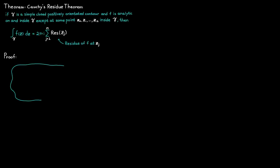The first thing we have to do is to draw a bit. Here we have our contour gamma, and in our contour we are going to have some isolated singularities denoted as C0, C1, and so on. In this case we're going to have three isolated singularities, but know that the key concepts of this proof can be applied to whichever amount of isolated singularities you have — the proof will still be valid.